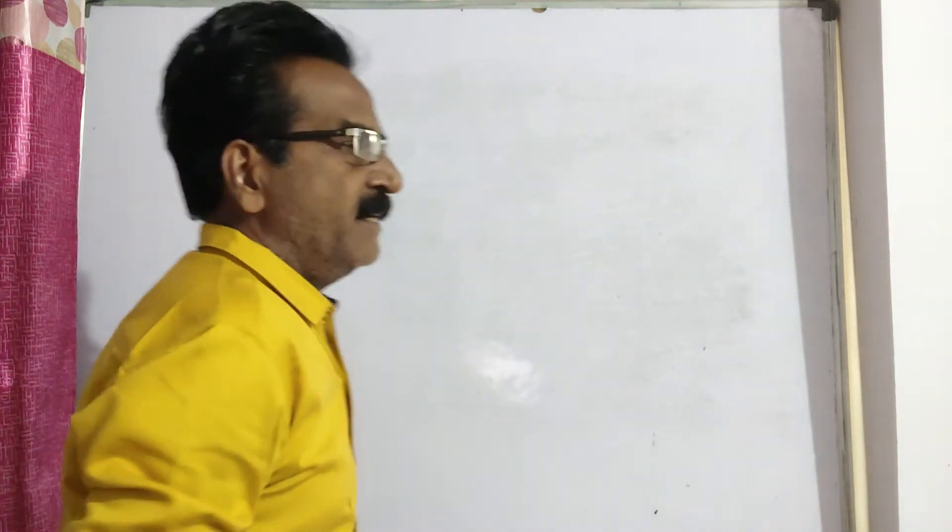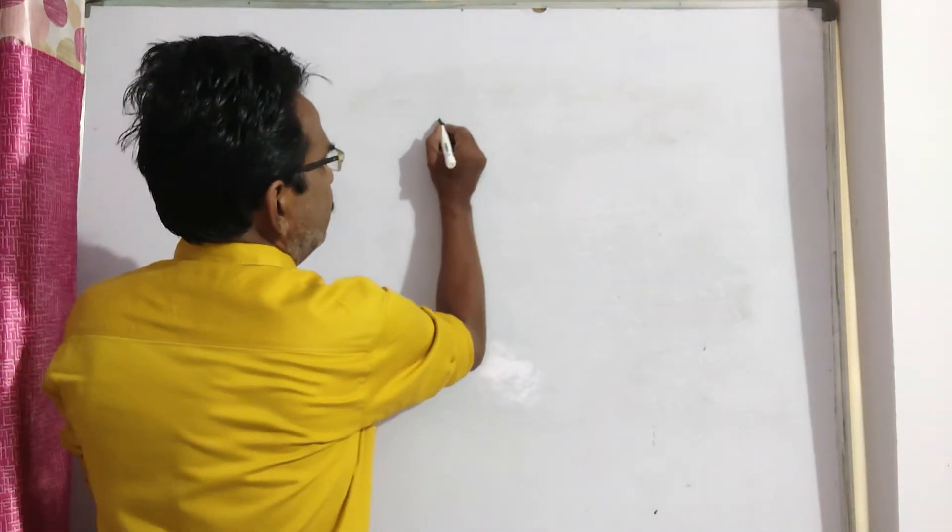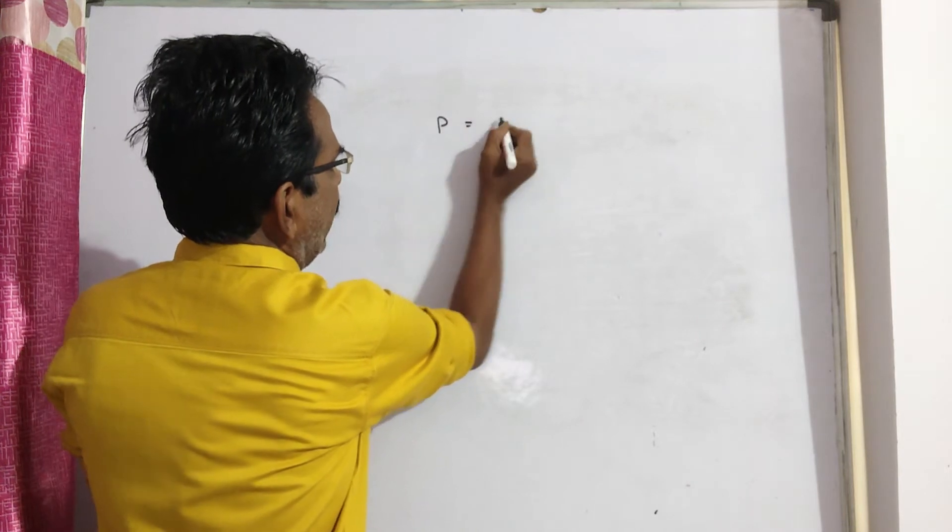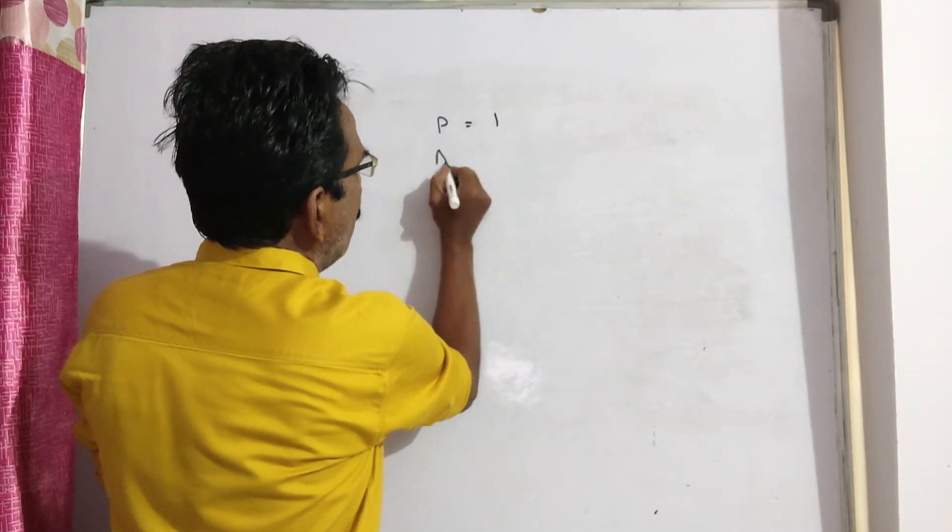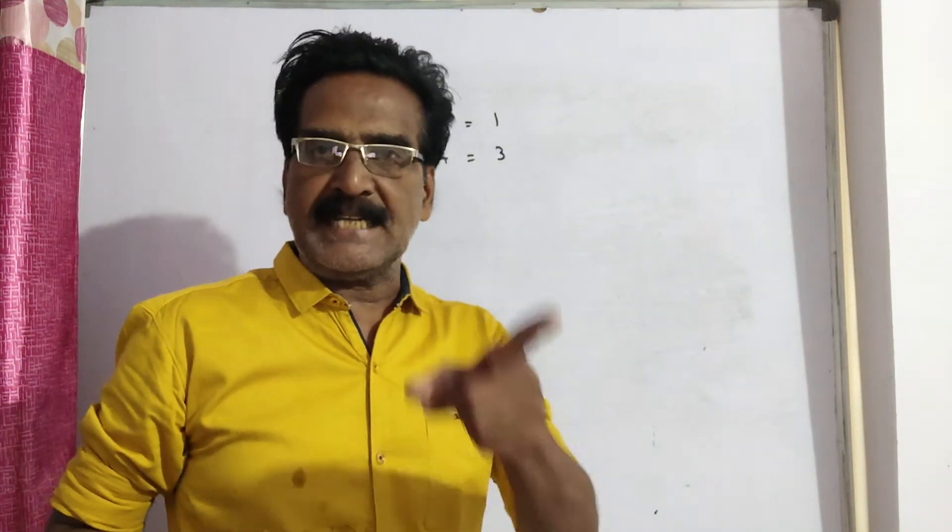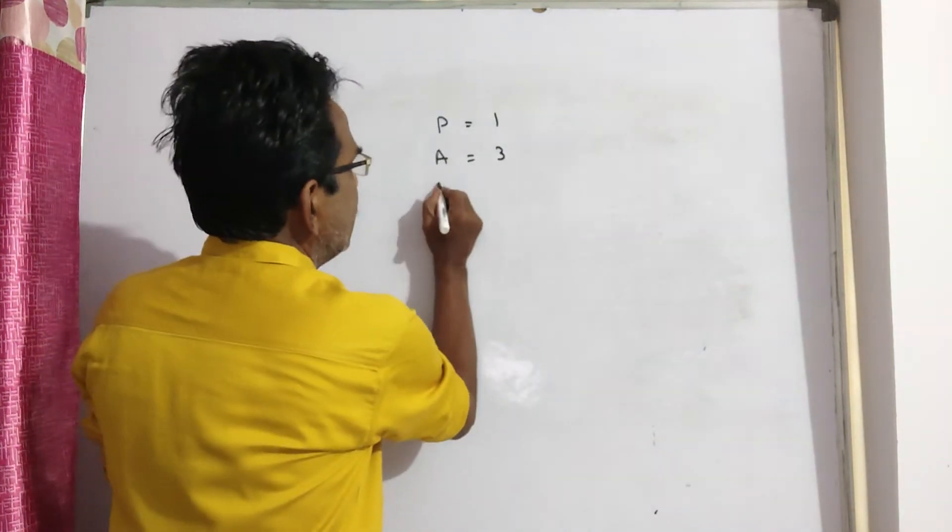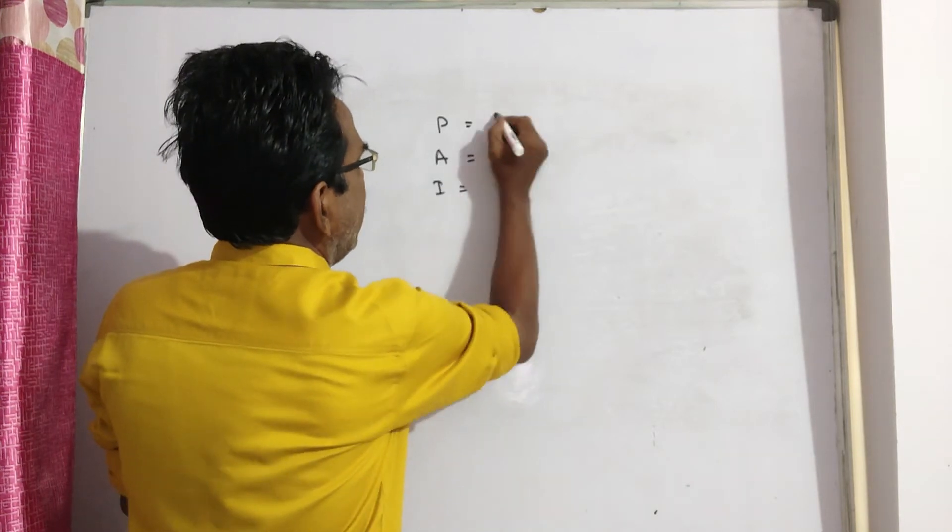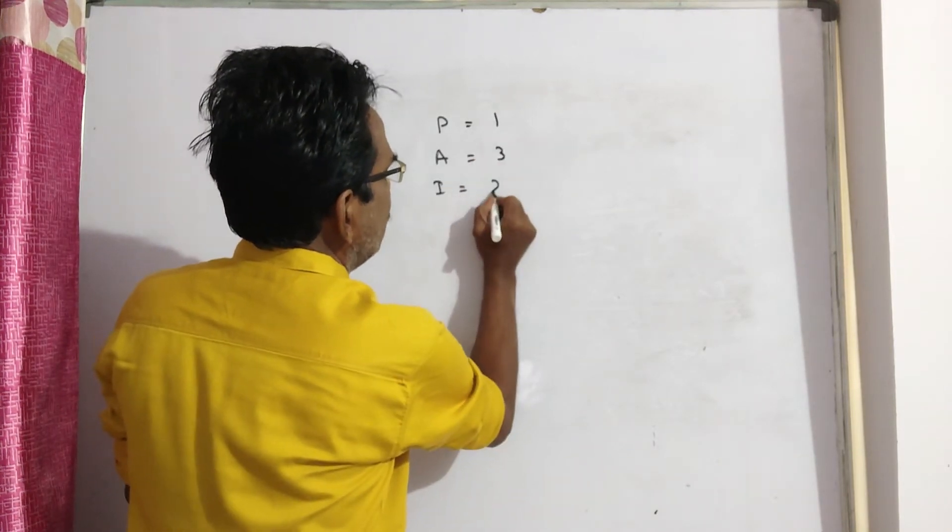At what rate percent per annum does a certain sum of money triple itself in 6 years? Friends, triples means if P equals 1, amount equals 3. When 1 becomes 3, then it is tripled. Now, interest equals amount minus principal, 3 minus 1, which is 2.